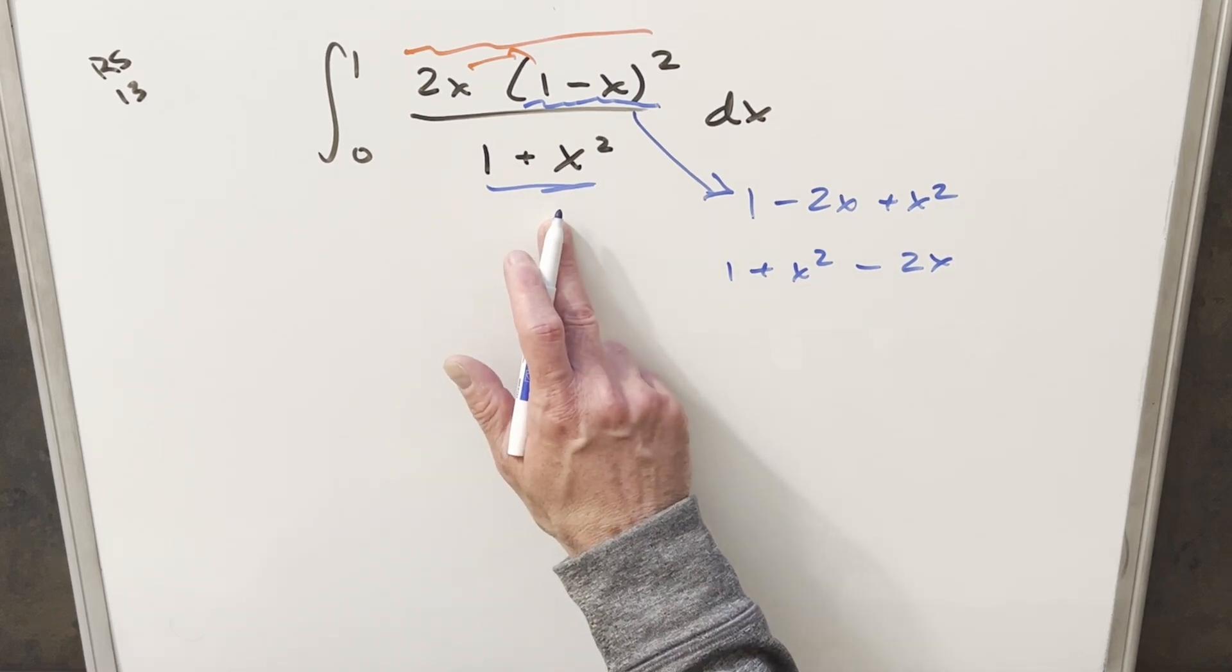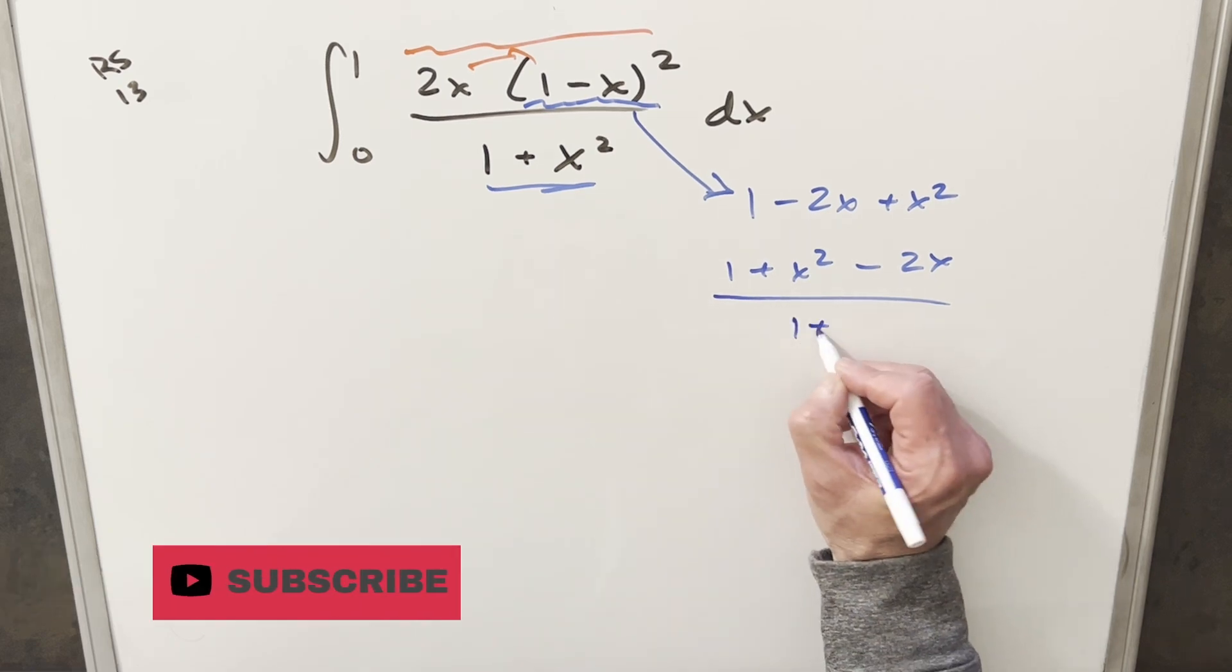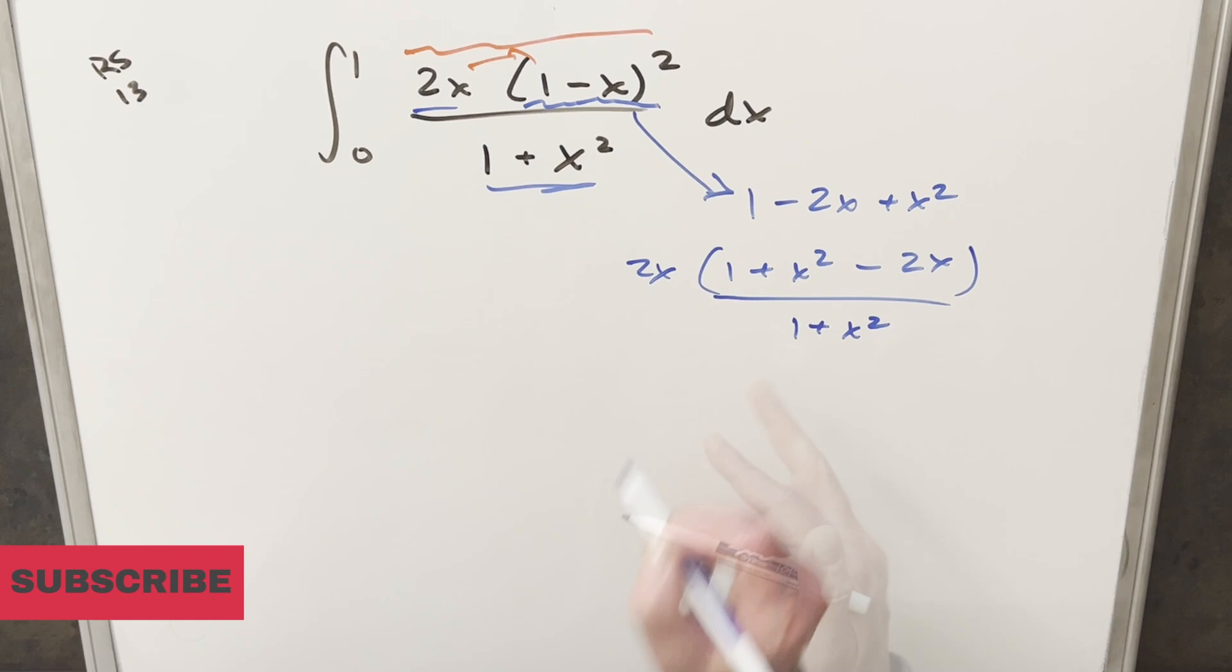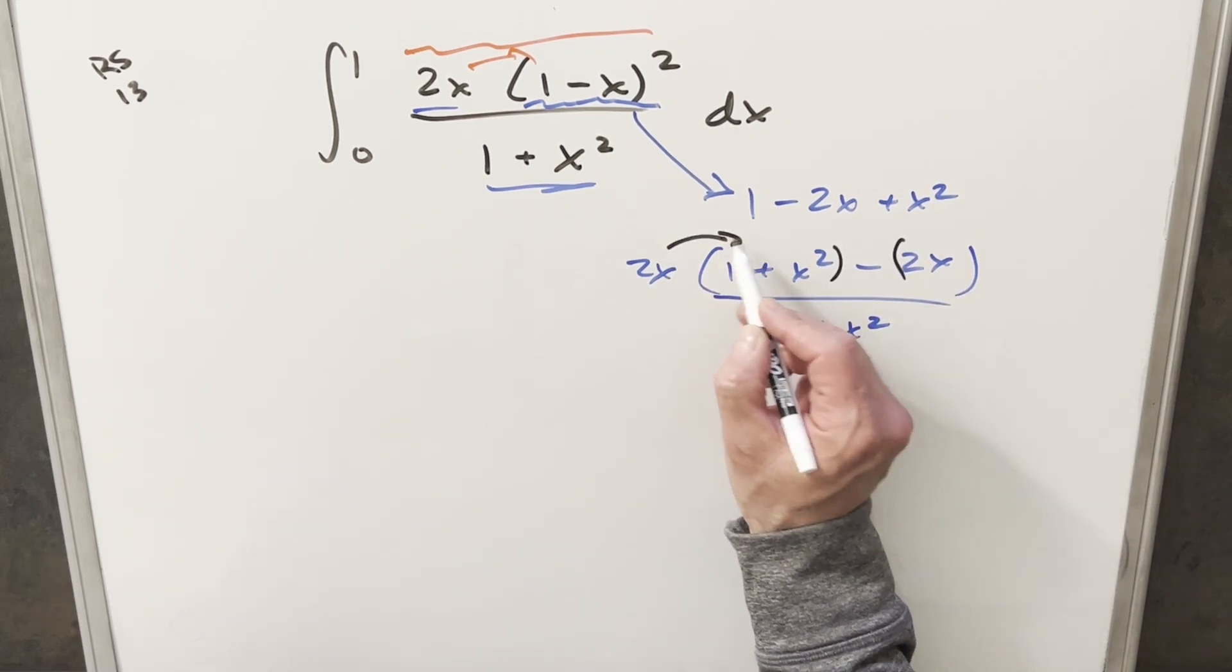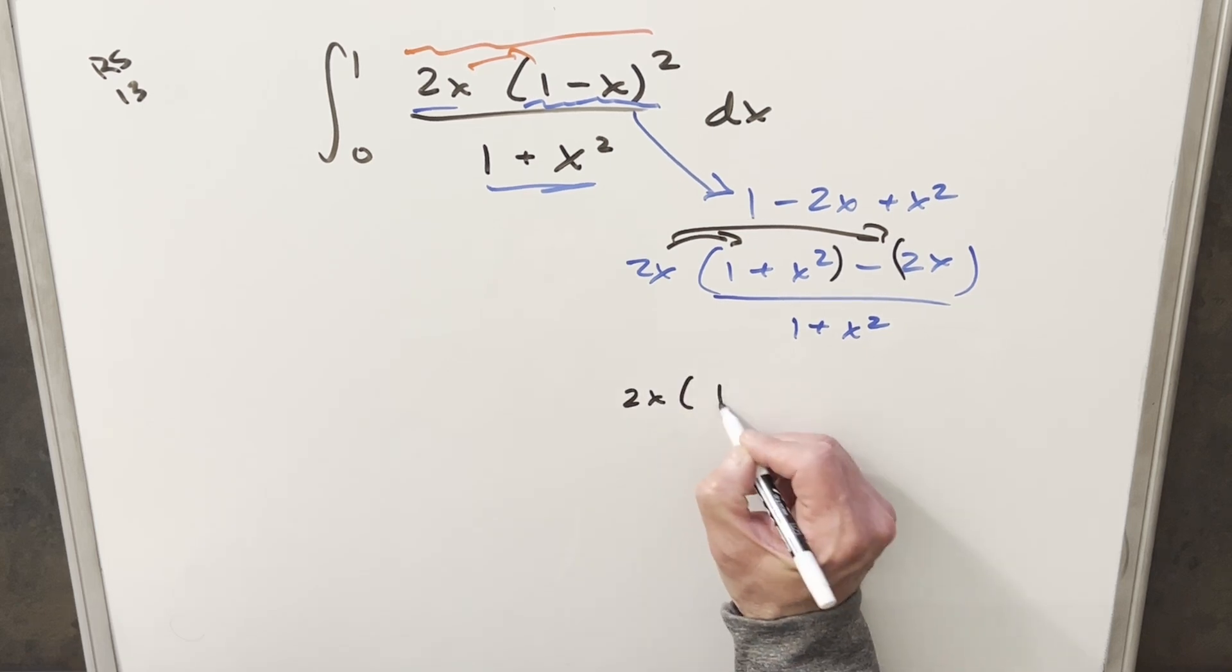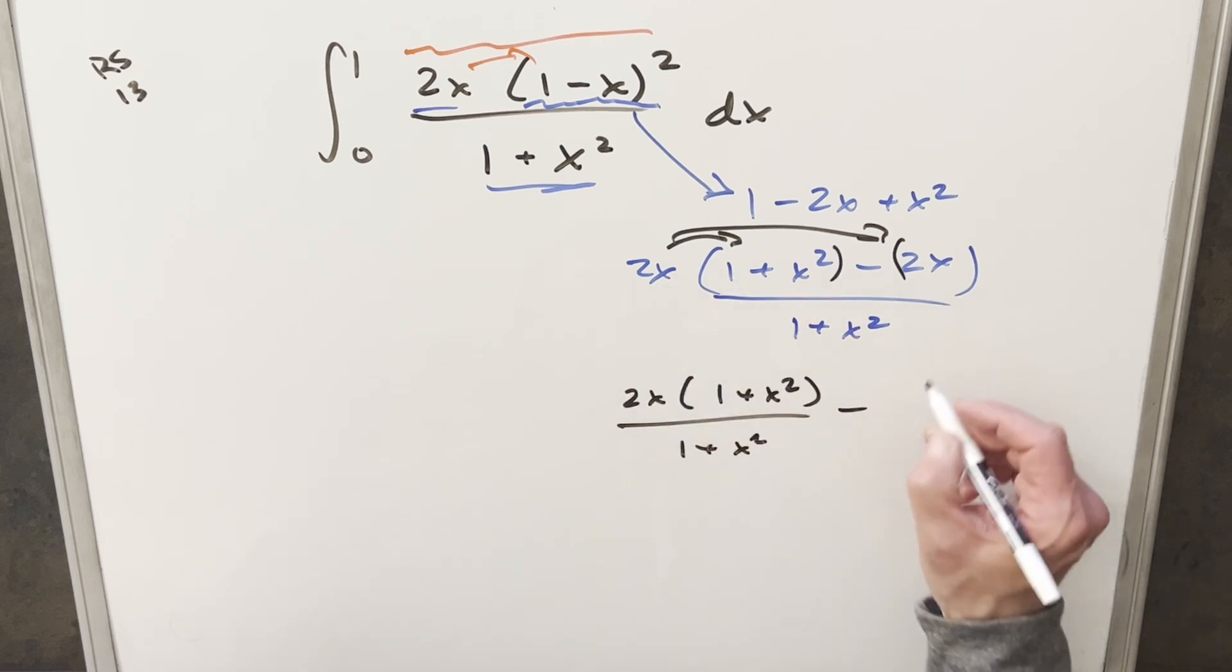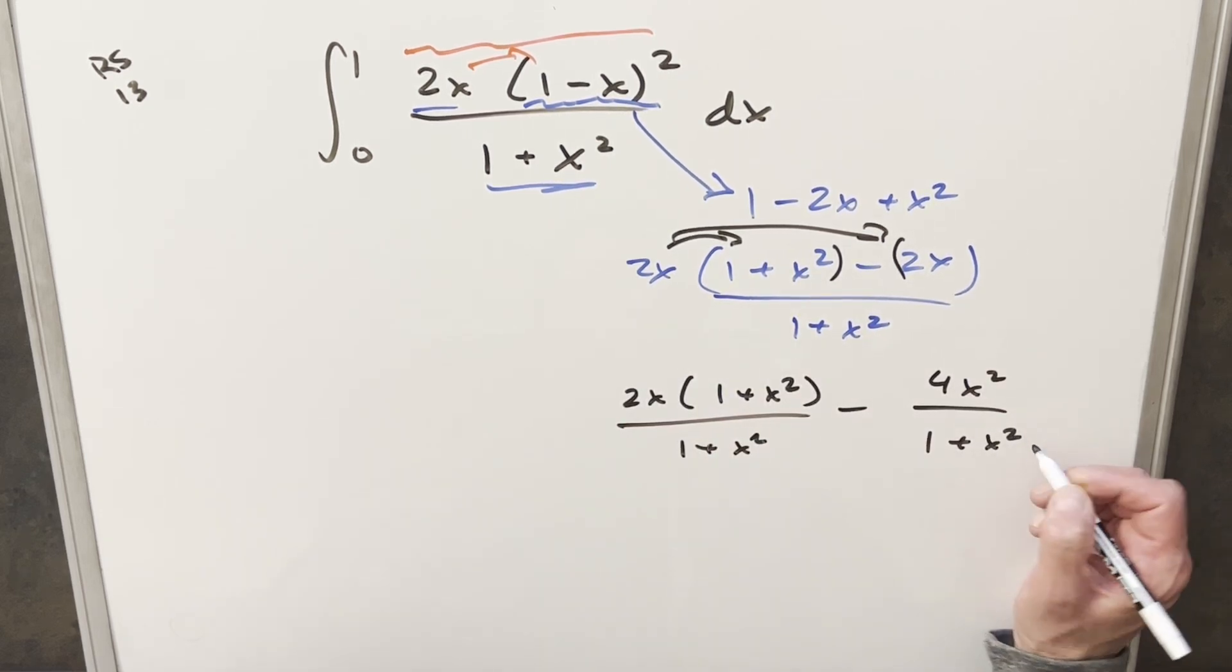So bringing everything else in, we have this piece in the denominator, and we're going to have this 2x here out front. And so in order to try to get this cancellation, let's just split this up, distribute this in, and break this into two fractions. So for the first one, we're going to have this 2x times (1+x²) over here. And then for the second one, this is going to become 4x² in the numerator all over 1+x².